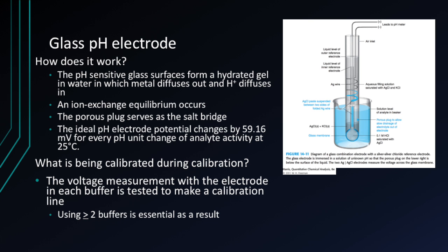pH can also be measured using a glass electrode. The pH-sensitive glass surfaces form a hydrated gel in water, from which metal diffuses out and H+ diffuses in. An ion-exchange equilibrium occurs in which the cations in the glass are fully replaced by H+. The porous plug serves as the salt bridge. The ideal pH electrode potential changes by 59.16 mV for every pH unit change of analyte activity at 25°C. Voltage measurements in each buffer are used to make a calibration line, requiring two or more buffers.